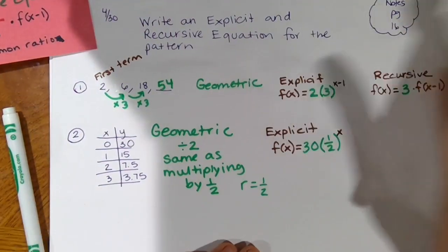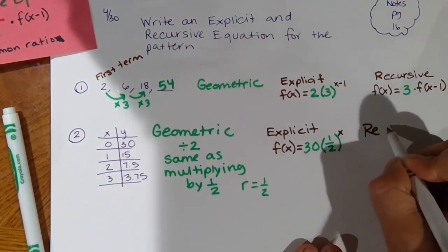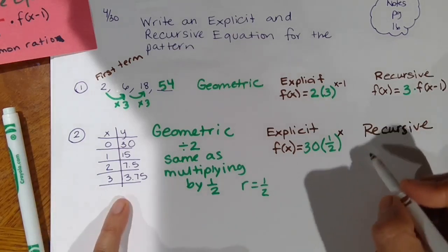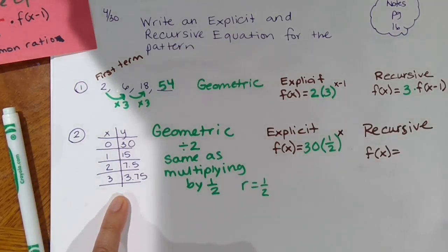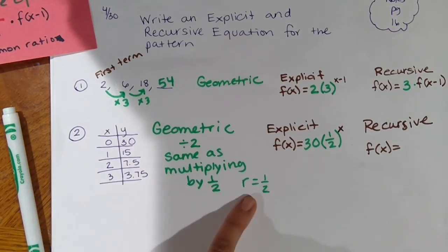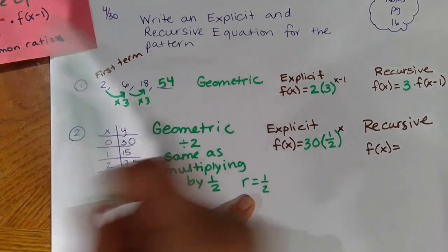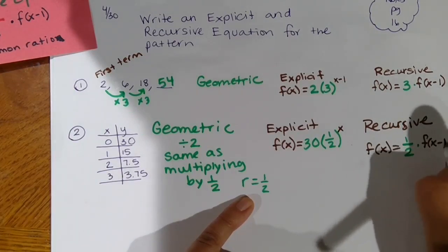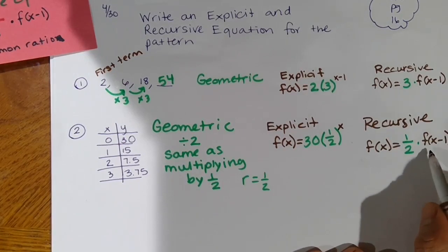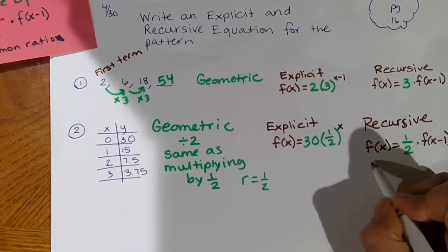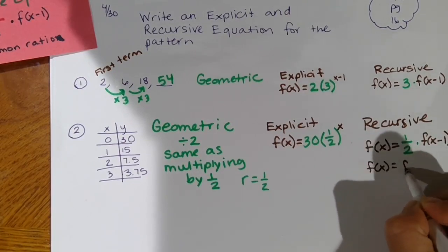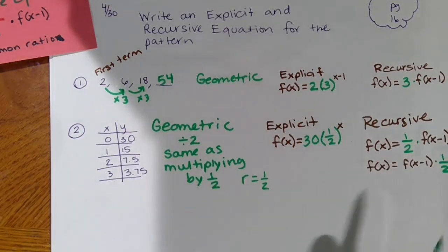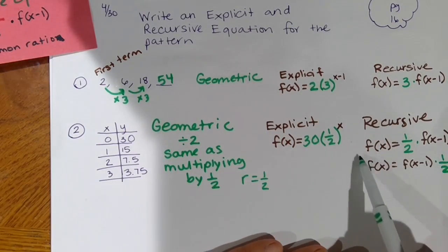The recursive equation is the same idea: to find the next term, it equals one-half times the previous term. You could also write this as the previous term times one-half — that's the commutative property of multiplication, like 2 times 3 is the same as 3 times 2. They prefer it written as one-half times the previous term, but both mean the same thing.